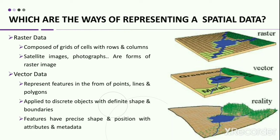Raster data is composed of grid cells with rows and columns. The whole geographic area under a raster dataset is divided into groups of individual cells which represent an image or a feature — for example, a satellite image, photographs, or a scanned image. A vector data represents all features as points, lines, and polygons, and is generally applied to discrete objects with defined shapes and boundaries. In a vector data format, the features have a precise shape and position with attributes and metadata.